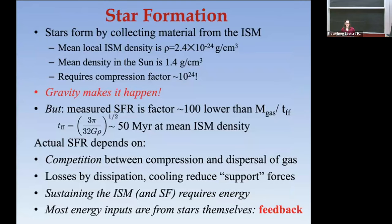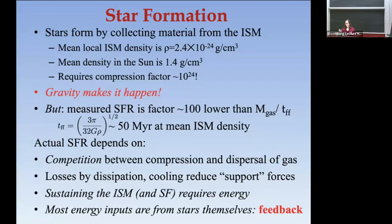Even though gravity is driving this, the measured star formation rate is a factor of 100 less than the maximum rate — that is, the gas mass divided by the freefall time of about 50 million years at average ISM density. Star formation depends on competition between compression by gravity and dispersal of gas by turbulence. Sustaining the ISM and limiting star formation requires energy, and most of the energy comes from stars themselves — because it returns due to star formation, we call it feedback.